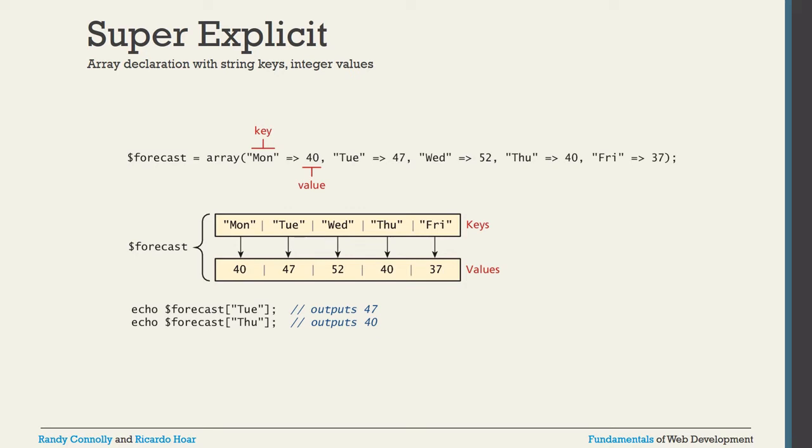Not only integers — if you want, keys can be strings. For example, an array called forecast where key 'Mon' has value 40, key 'Tue' has value 47, key 'Thu' has value 52. To display a value, you write the key: echo forecast['Tue'] outputs 47, and echo forecast['Thu'] outputs 40. Whatever indexing format — string or integer — you used when initializing the array, use the same key format to retrieve the value.